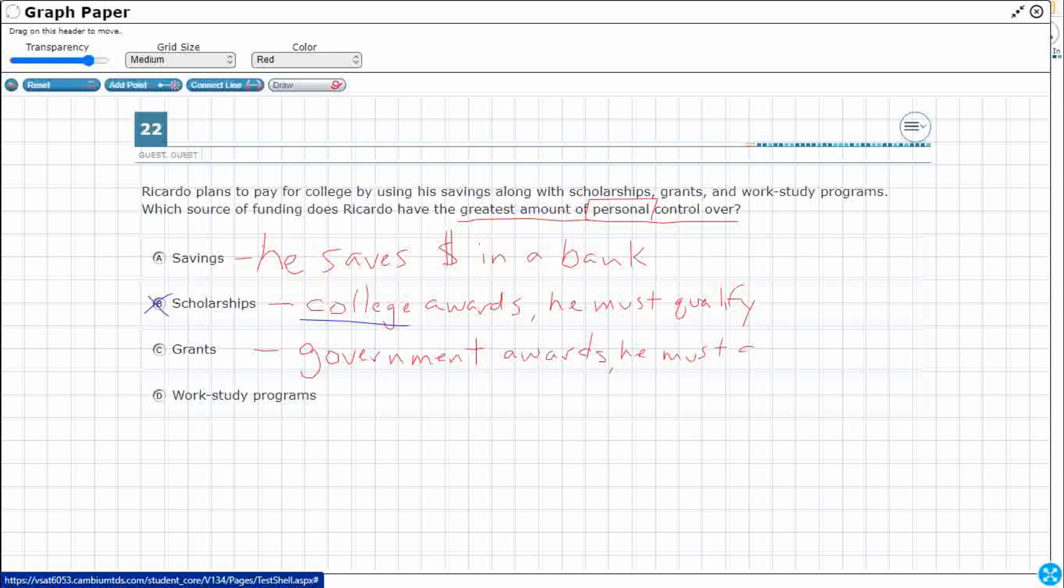So like the Pell grant, a lot of it is based on your parents' income and you have to maintain a certain number of hours that you attend each semester. You can't just get a Pell grant for going to one class. You have to be considered a full-time student, most likely. So once again, this is not really something that he controls because it's the government that awards it.